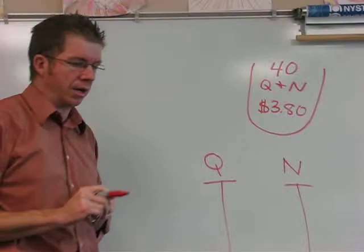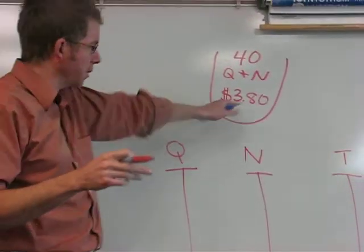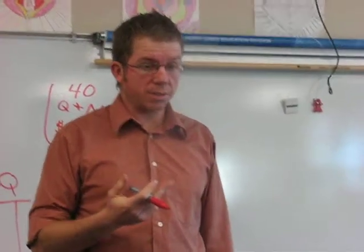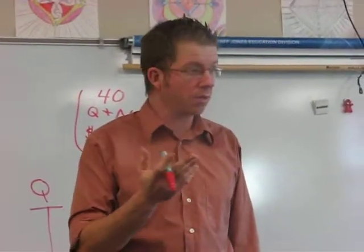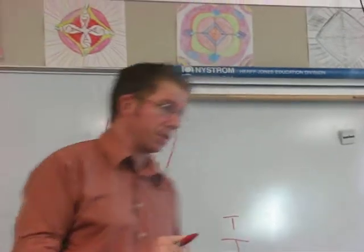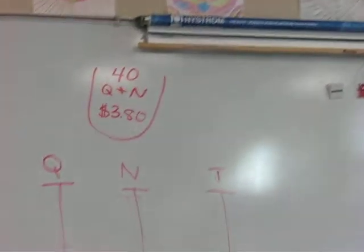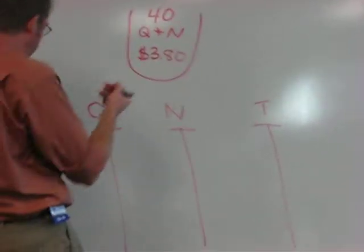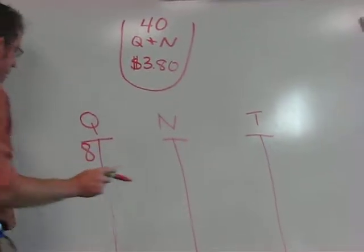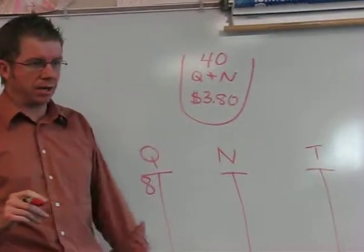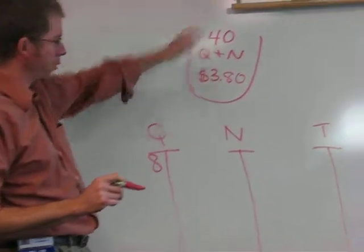We start by making a guess. I know that $3.80 isn't a lot of money, and I like to do my quarters and make the math as easy as possible, so I try to do it in fours when I make my initial guess. So I'm going to start with eight quarters. I don't know if that's right or wrong, but we're going to start with that.